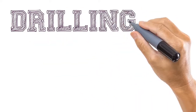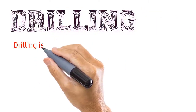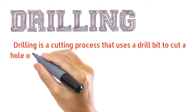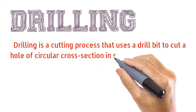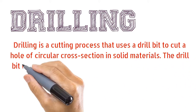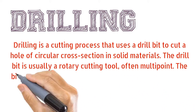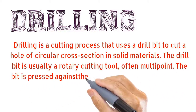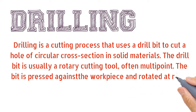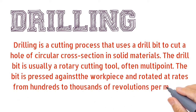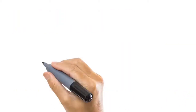Drilling is a cutting process that uses a drill bit to cut a hole of circular cross-section in solid materials. The drill bit is usually a rotary cutting tool, often multipoint. The bit is pressed against the workpiece and rotated at rates from hundreds to thousands of revolutions per minute.